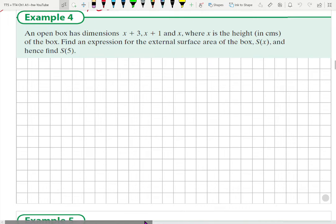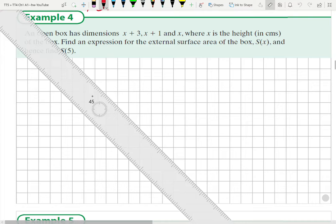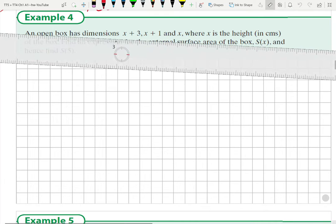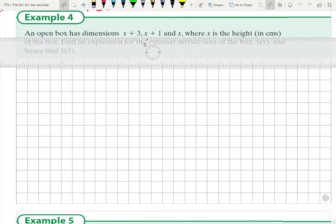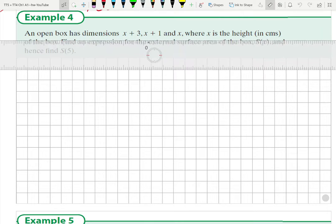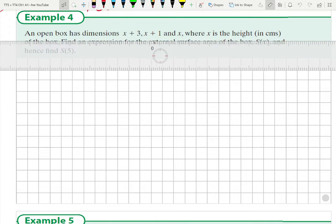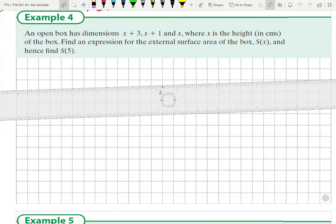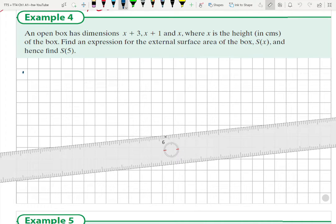All right, so let's have a look. An open box has dimensions of x plus 3, x plus 1, and x, where x is the height. Let's do a little drawing here.